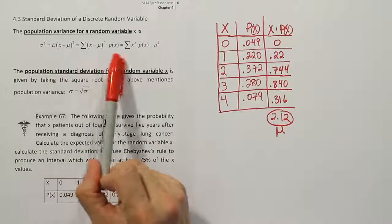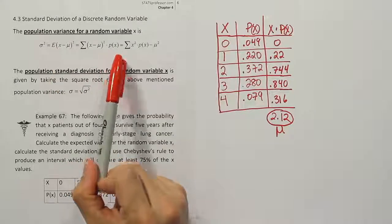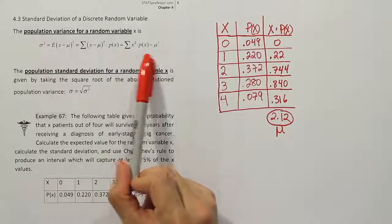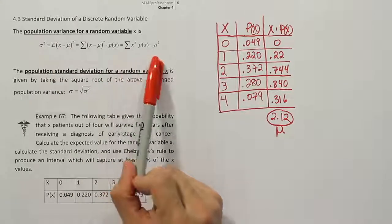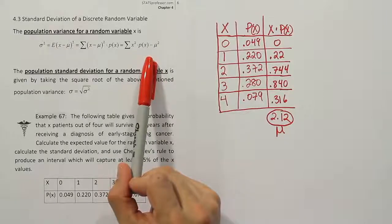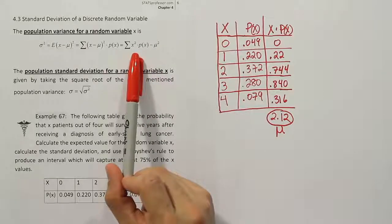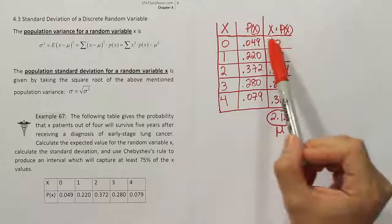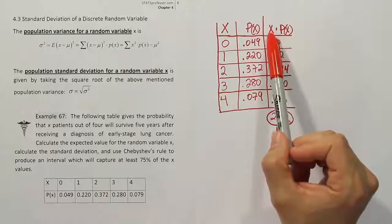The formula here, this is all just different ways to express the same relationship, but you'll ultimately want to use this to do the calculations. This is sort of the computational version of the formula. What they're telling us that we have to do is we have to create a column called X squared times P of X.